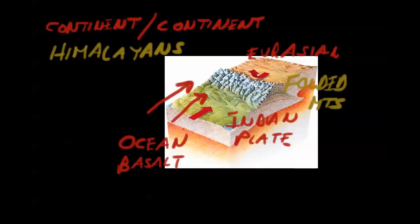Notice the lack of volcanoes at a continent-continent boundary — there's no magma that can work its way up. To recap: the Indian plate and the Eurasian plate shove into one another; the Eurasian plate is less dense so it's forced up; the Indian plate is the one subducting; and all this land mass gets crumpled into folded mountains. We'll be looking at these features in Google Earth.